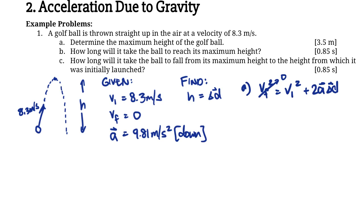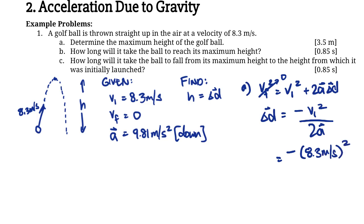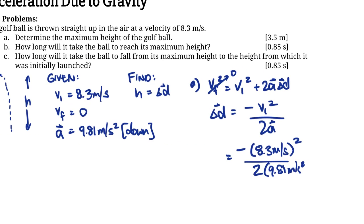That makes it a lot easier. Let's rearrange this for delta D. If we're rearranging for delta D, it's going to be negative VI squared over 2 times the acceleration. We can just plug in our numbers: negative 8.3 meters per second squared, over 2 times the acceleration which is 9.81 meters per second squared downward.